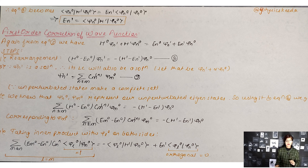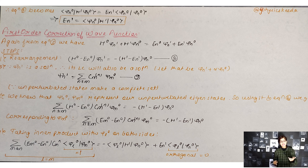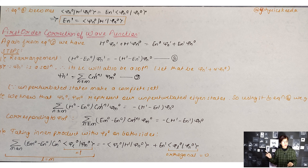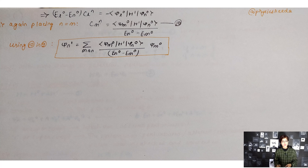Considering L = M for the LHS, E_M0 converts and C_MN becomes C_LN, while the inner product gives 1. For the RHS, since the two states are perpendicular, the second term vanishes. Proceeding further and placing L = M, we get C_m→n = ⟨ψ_m0|H'|ψ_n0⟩ / (E_n0 − E_m0).